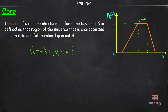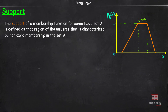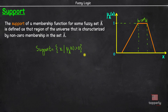Next, let us learn about support. The support comprises of those elements X of the universe such that membership value of X in the fuzzy set A is greater than 0. In this graph, you can see that for this entire region, the membership value is greater than 0. So this region is called support.